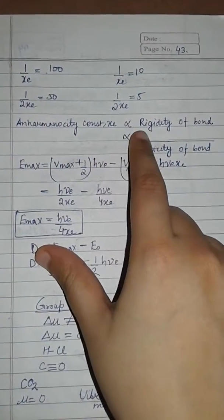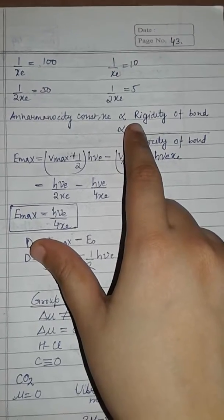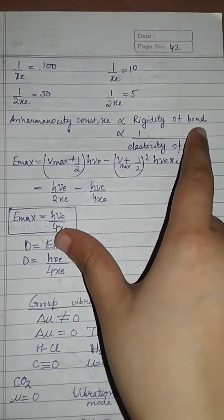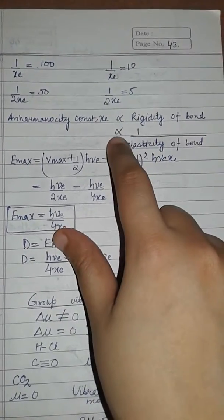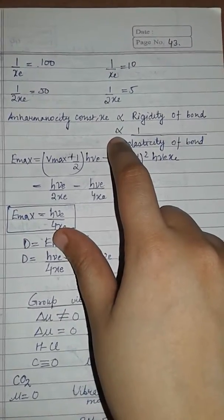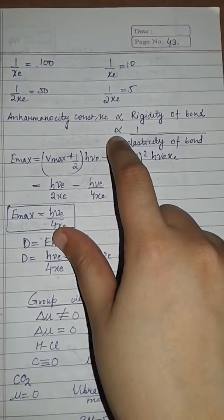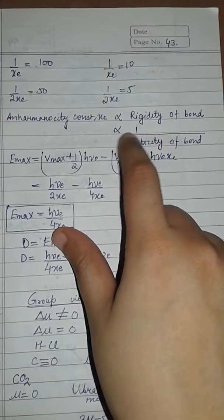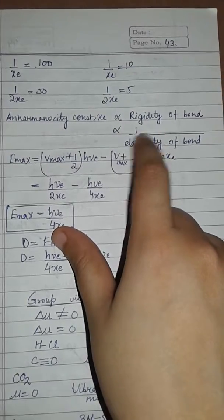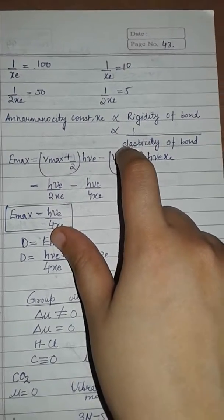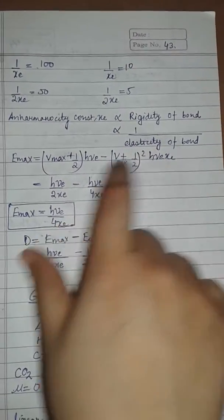The anharmonicity constant X_e is directly proportional to the rigidity of the bond, or equivalently, inversely proportional to the elasticity of the bond.